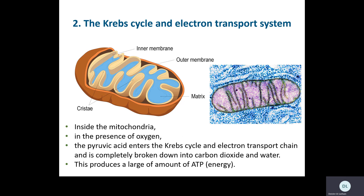So in the second stage, the pyruvic acid goes into the mitochondrion — but only if oxygen is present. The pyruvic acid goes through the Krebs cycle and the electron transport chain and is completely broken down to the carbon dioxide and water from our equation. This breakdown involves breaking many bonds, releasing large amounts of energy. That energy is stored by our energy carrier molecule, adenosine triphosphate or ATP — a quick energy store in our cells.